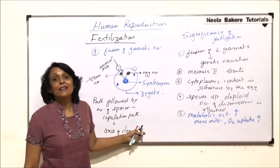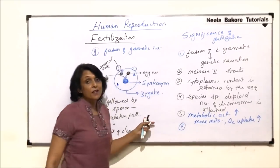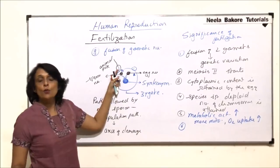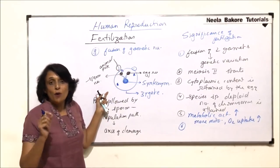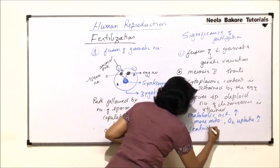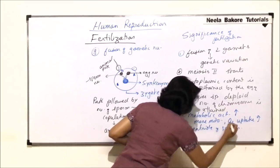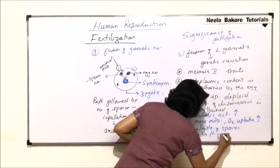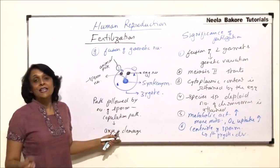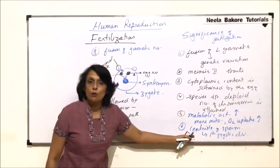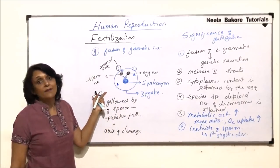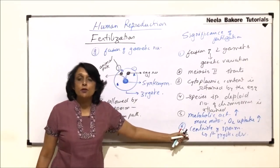Another significant point of fertilization - because egg is without centriole, the centriole which comes from the sperm is responsible for the first zygotic division. Centriole of sperm initiates first zygotic division. So after fertilization, if zygote has to divide, spindle formation would take place. Centrioles would be required, and those centrioles actually come from the male gamete, from the sperm. So that is how the zygotic division would be triggered.